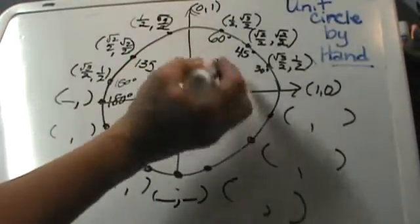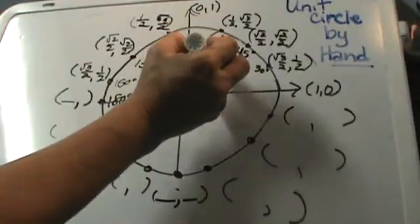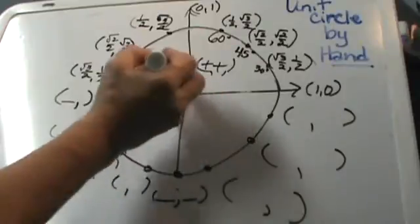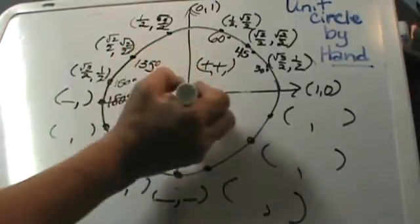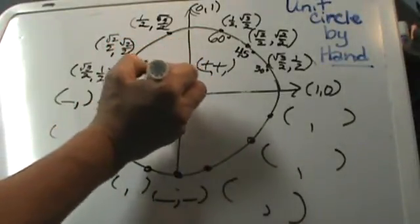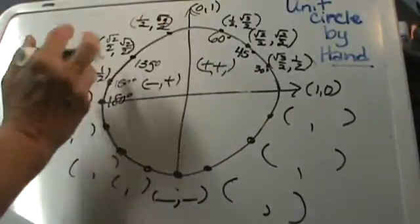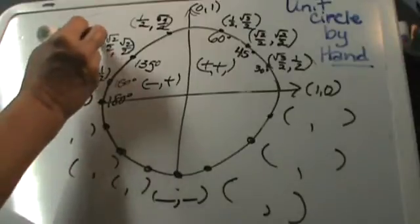Now we have to think about signs. Quadrant 1 has positive and positive as the two signs but quadrant 2 has negative positive signs. Negative first and positive second. That means every ordered pair over here is going to have a negative first coordinate.